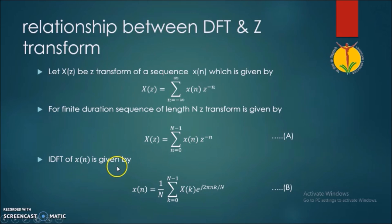Here we also know the IDFT X(n) which is given by X(n) equals 1 upon N summation from k equals 0 up to N minus 1 of X(k) e raised to j 2 pi n k divided by N.